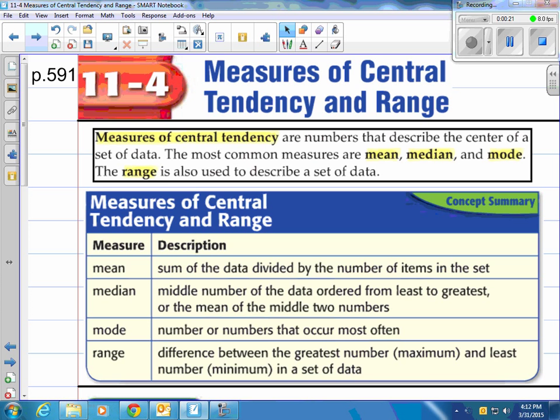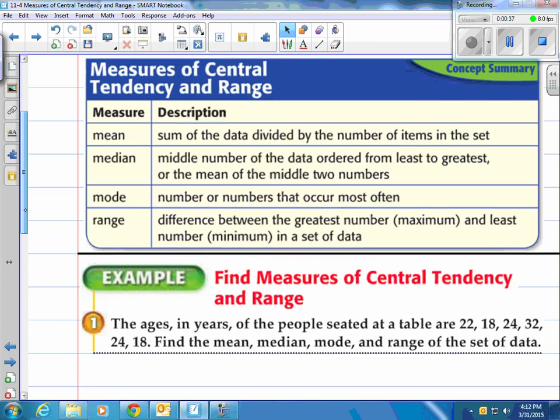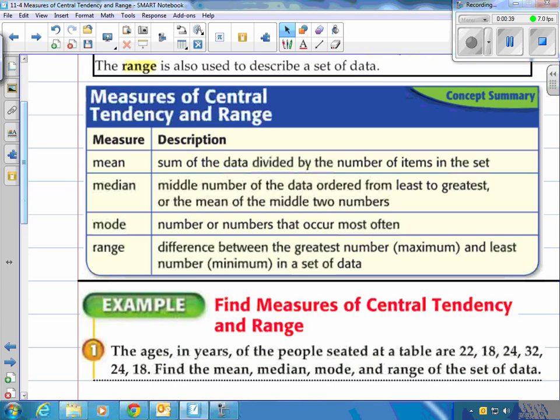We call those the measures of central tendency and then range. So measures of central tendency are numbers that describe the center of a set of data. The most common measures are mean, median, and mode, and the range is also used to describe a set of data. So we're gonna look at these four. You've probably heard of them and maybe even calculated these before. So I'll go through this pretty quick here.